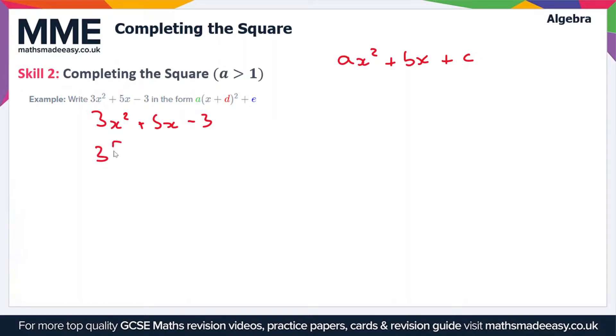So we're going to end up with 3 lots of x² plus 5 over 3x, and then we're just going to leave that there and put the minus 3 on the outside of the brackets.